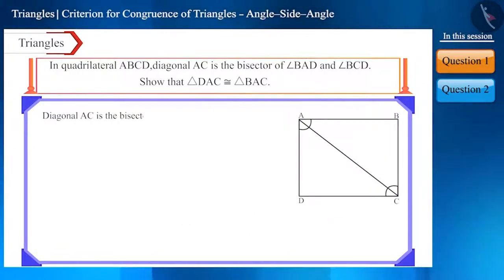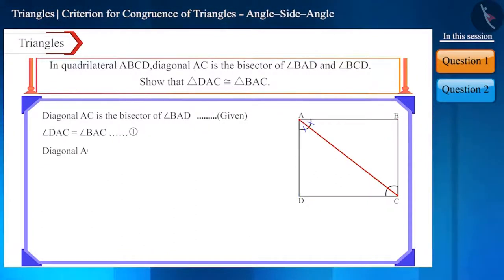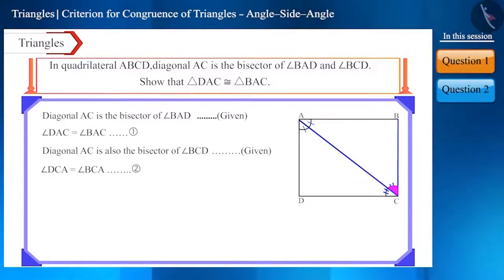We are given that diagonal AC is the bisector of angle BAD. Therefore we can say that angle DAC and angle BAC will be equal. Diagonal AC is also the bisector of angle BCD. That is, angle DCA will be equal to angle BCA.